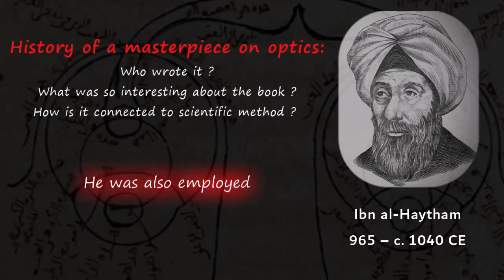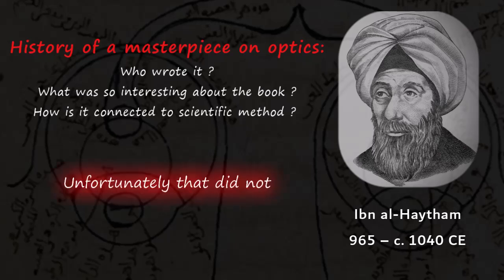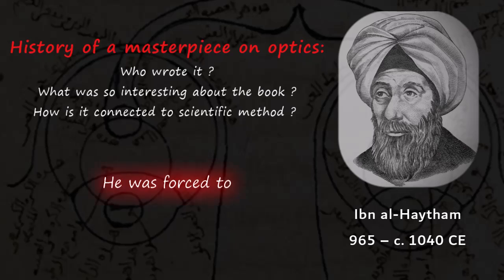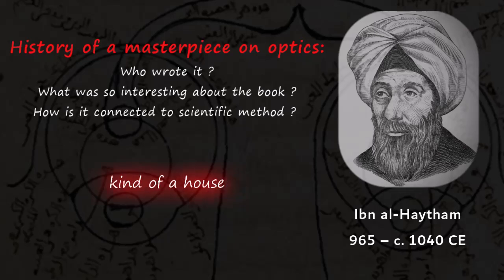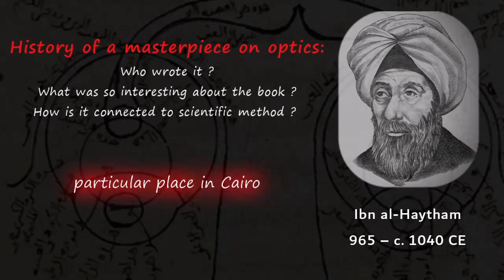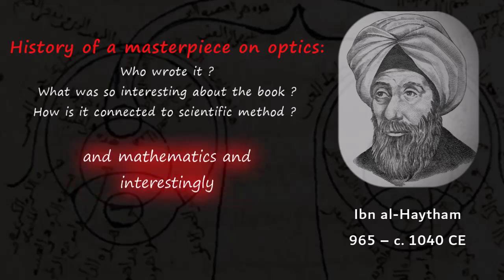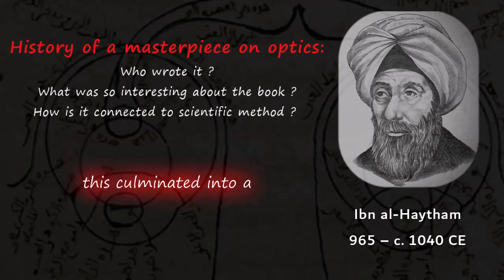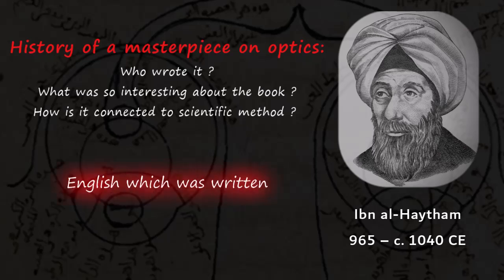He was also employed to see whether they could regulate floods in the Nile River. Unfortunately that did not happen, and this resulted in a major problem for al-Haytham. He was forced to leave where he was living and settle in Cairo under a kind of house arrest, which confined him to a particular place in Cairo but also gave him a lot of time to think about science and mathematics. Interestingly, this culminated into a wonderful book which we now call the Book of Optics in English, written roughly around 1020 CE.